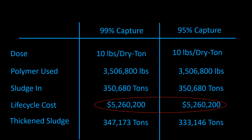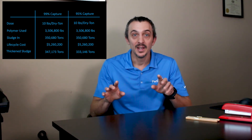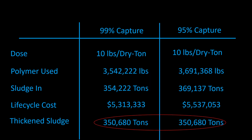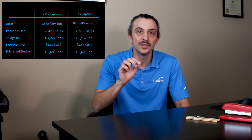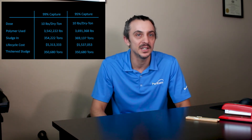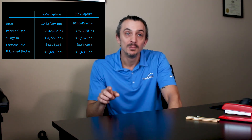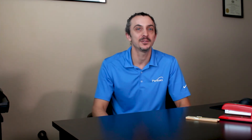So in theory, both thickeners' life cycle cost of polymer usage would be $5.26 million to thicken the same amount of sludge. However, in reality, these thickeners aren't producing the same amount of sludge. In order to produce 350,000 tons of thickened sludge, thickener 2 has to treat about 370,000 tons and apply 10 pounds of polymer to each of those tons, because of all the solids lost during the thickening process. Which makes the real cost of polymer about $5.5 million — a difference of $225,000 between a thickener getting 99% capture rate and one getting 95% capture rate. Based on a theoretical calculation we are all using, these thickeners would have the exact same life cycle cost. That is $225,000 that is completely unaccounted for.